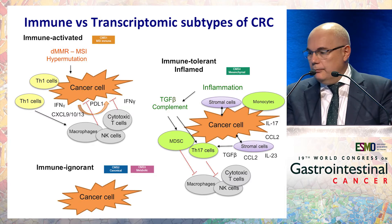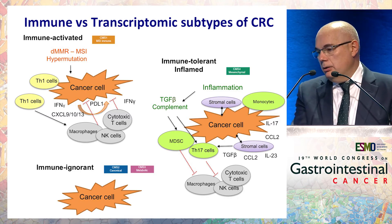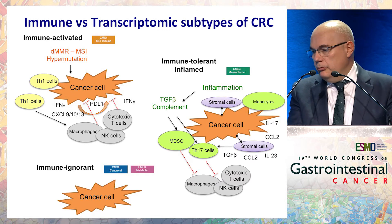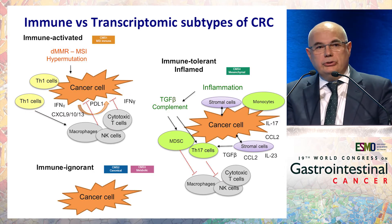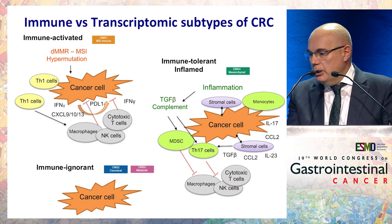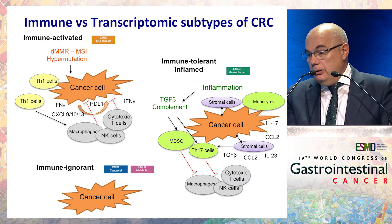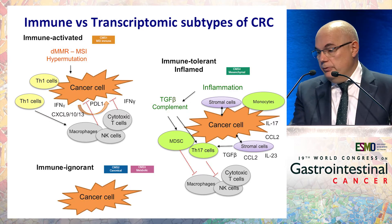The immune-tolerant or inflamed tumors are the CMS4 group. The principal mechanism here is related to inflammation, with regulation of TGF-beta and complement, which attracts myeloid-derived suppressor cells and Th17 cells — a subset of T cells that secrete interleukin-17 — as well as Tregs and monocytes. With all these repressive cytokines, this prevents macrophages, NK cells, and CTL cells from invading the tumor, making this a very repressive phenotype.